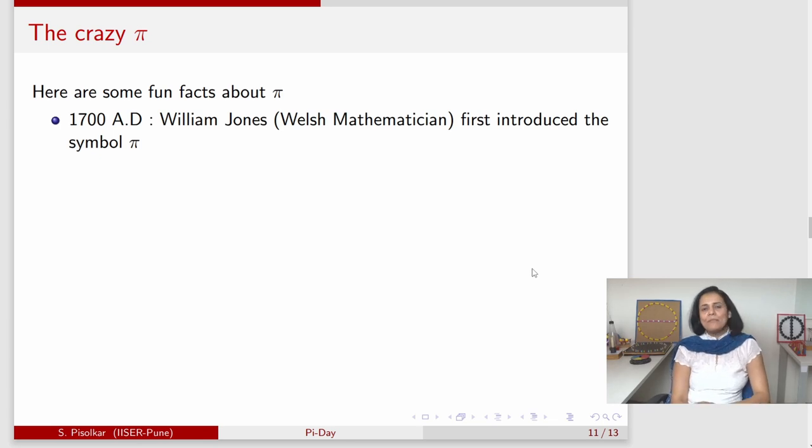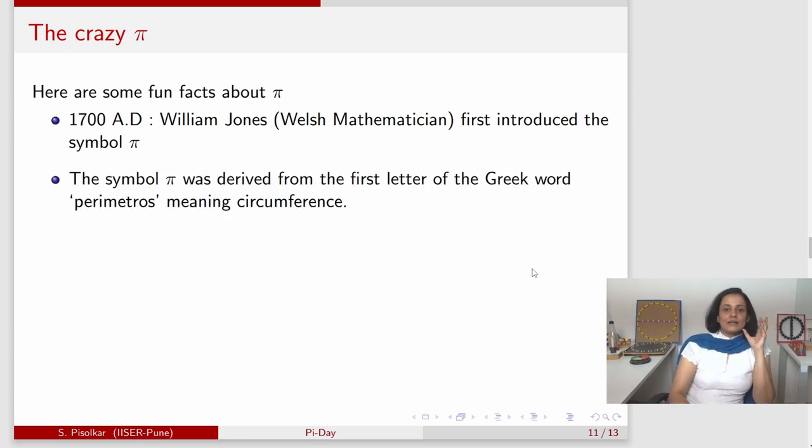Let me explain some amazing facts about pi. As we went through the historical timeline, in the 17th century, Welsh mathematician William Jones first introduced the symbol pi for this constant C over D. This symbol pi is not randomly chosen but represents the first letter of the Greek word perimetros. This is the representation of P in Greek. Perimetros means circumference.